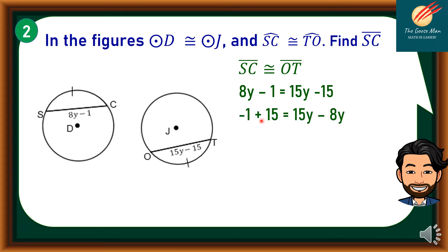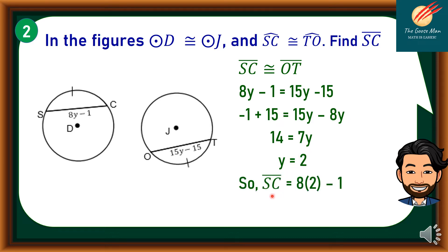Add 15 to both sides and subtract 8Y from both sides of the equation. So we have negative 1 plus 15 equal to 15Y minus 8Y, giving us 14 equals 7Y. Dividing both sides by 7, Y equals 2. To find SC, substitute into 8Y minus 1: 8 times 2 minus 1. Therefore, SC is equal to 15 units.